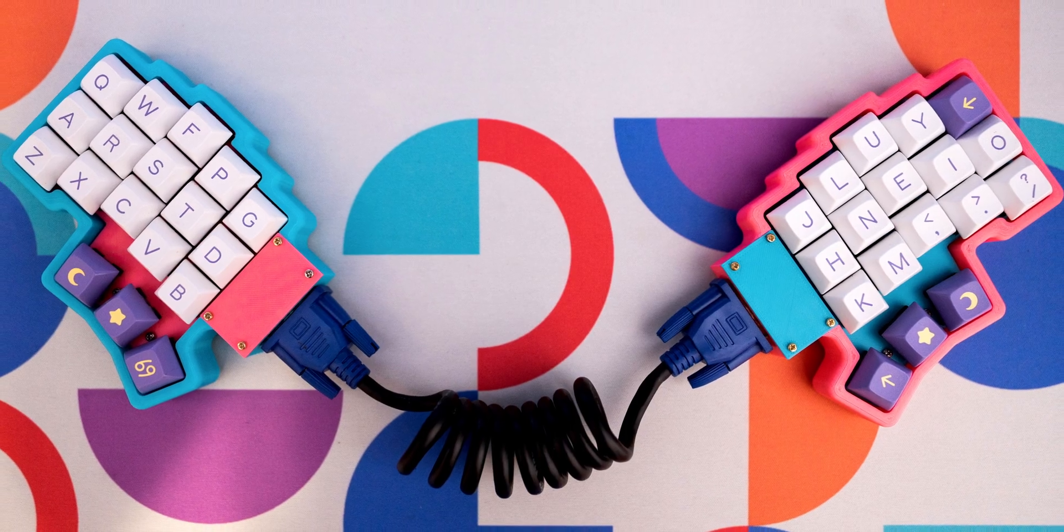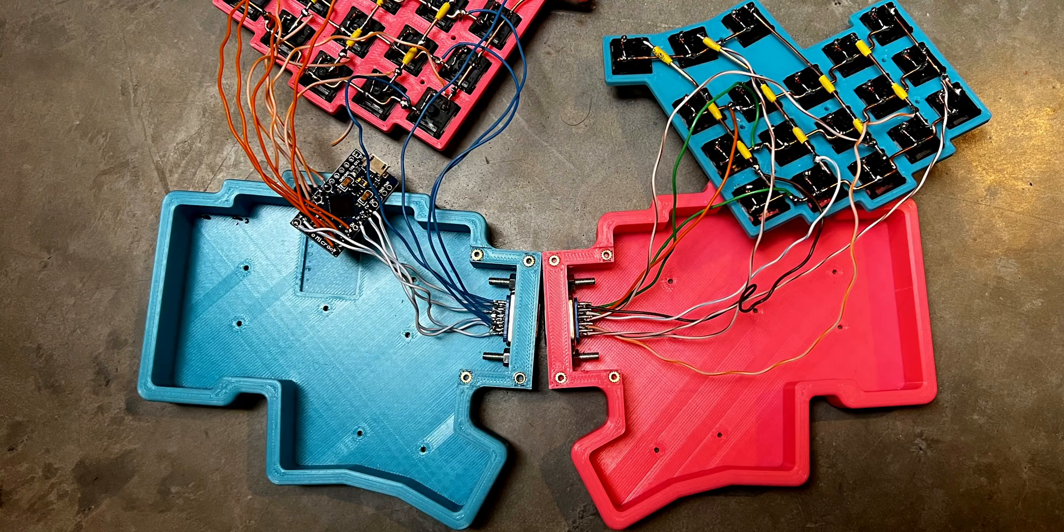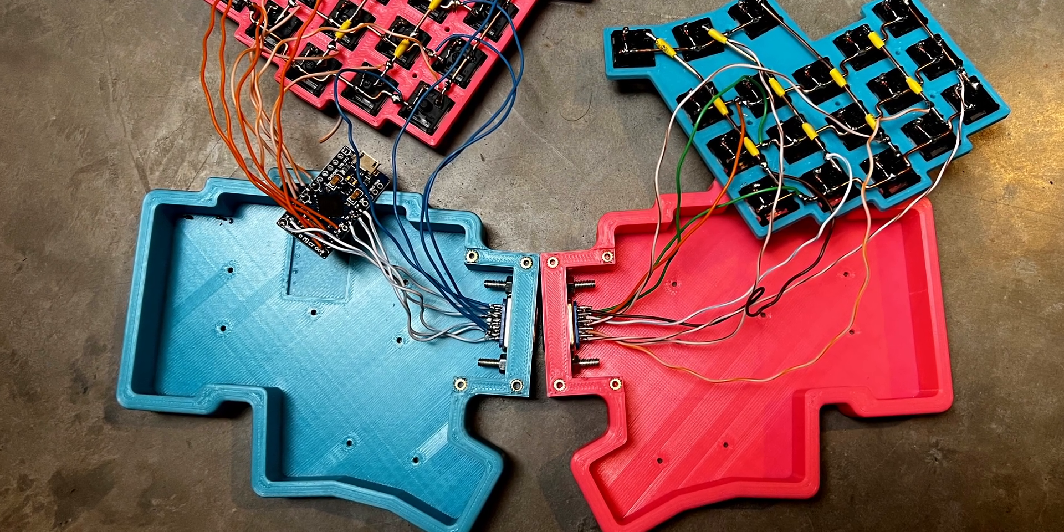Today we're building my first ever real split keyboard. I've done lots of monoblock splits and even did an actual split about a year ago called the Scato split that used a VGA cable. That one used one controller and passed a matrix from the right half to the left over the VGA cable. Today we're building a split board with two separate RP2040 controllers and using a TRS cable to connect the two halves.